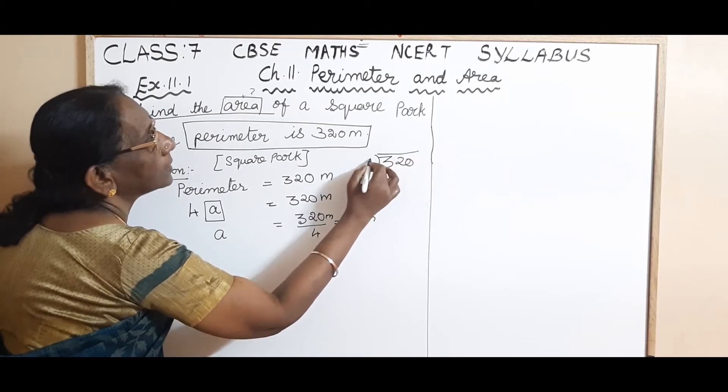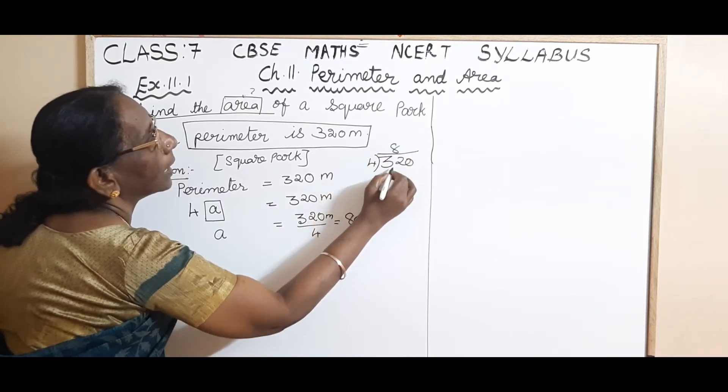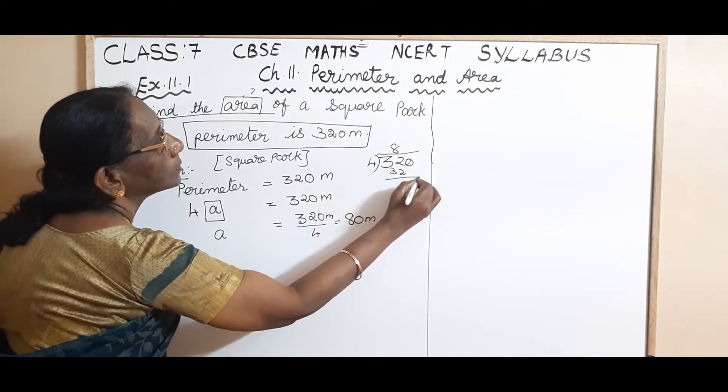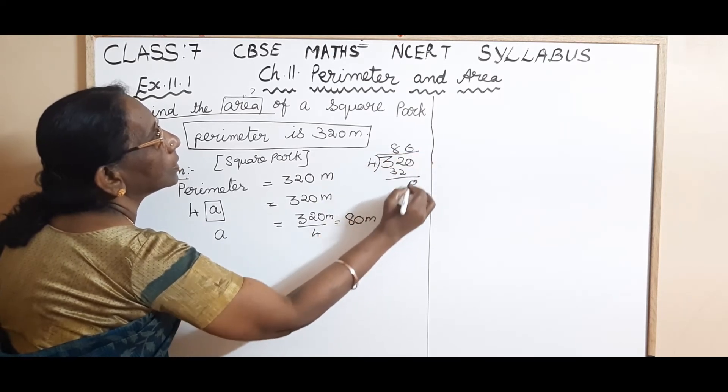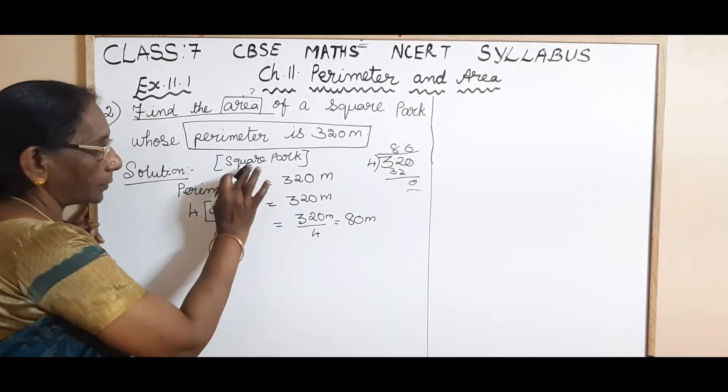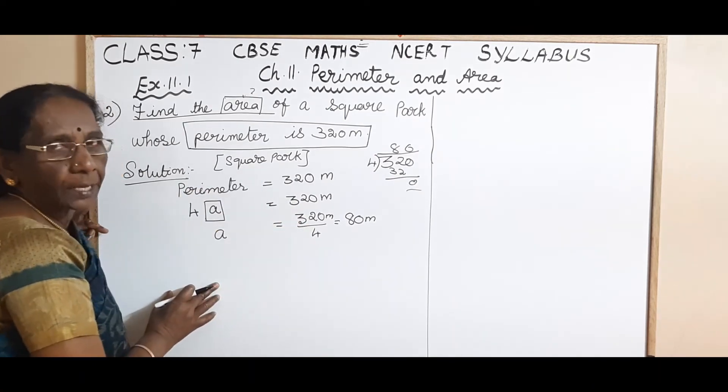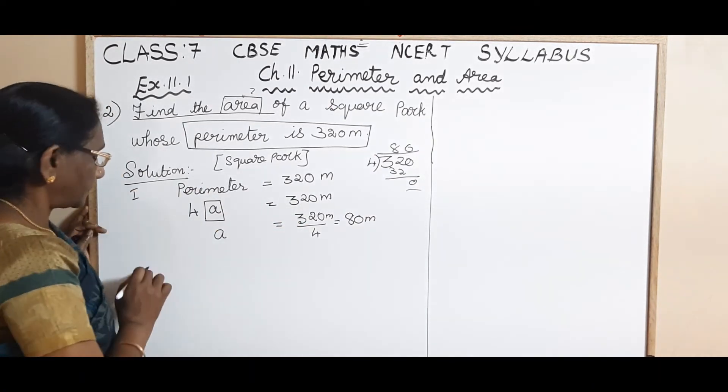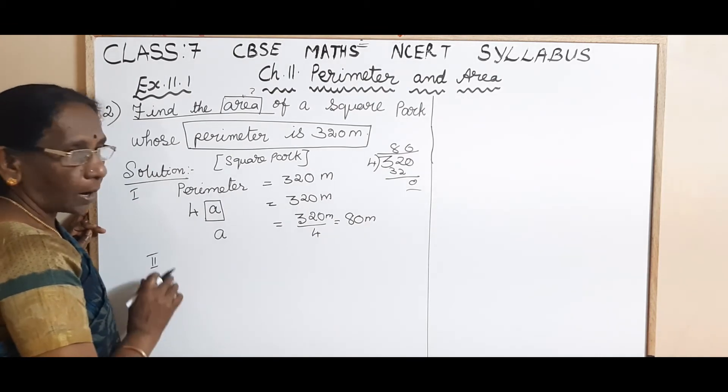Okay. You can do in mind. Now, you are in 7th standard. You should know to do in mind. 8 fours are 32. 0. 0. Okay. Now, you know the side of the square park is 80 meter. This is the first part. Now, let us come to the second part.